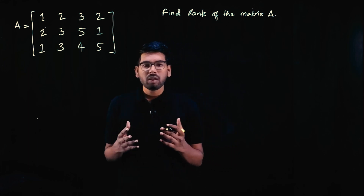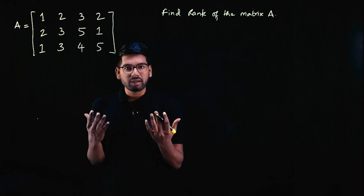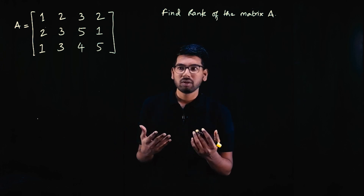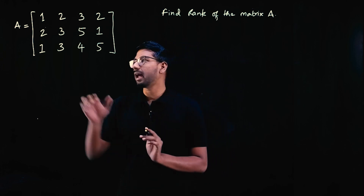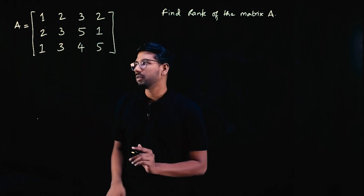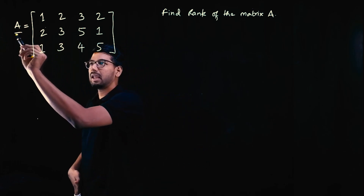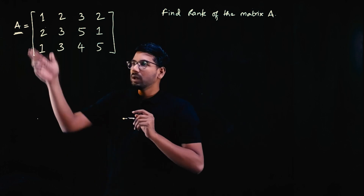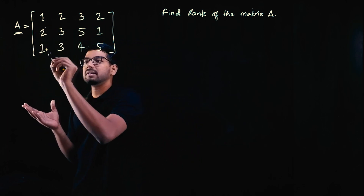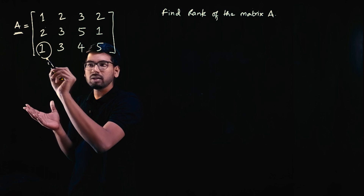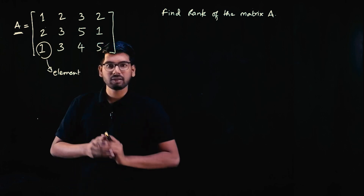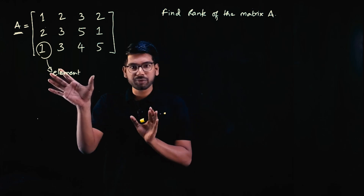What is the matrix? A matrix is a rectangular arrangement of numbers called elements. The numbers — the elements — are the elements of the matrix.